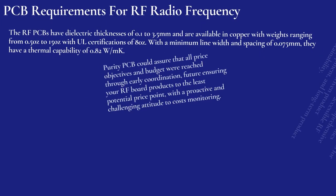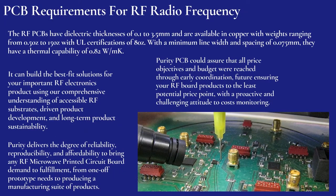PCB requirements for RF radio frequency: the RF PCBs have dielectric thicknesses of 0.1 to 3.5 millimeters and are available in copper with weights ranging from 0.5 ounces to 15 ounces, with all certifications of ADZ. With a minimum line width and spacing of 0.075 millimeters, they have a thermal capability of 0.82 W/mK, and can build the best-fit solutions for RF electronics products using comprehensive understanding of accessible RF substrates, driven product development, and long-term product sustainability.